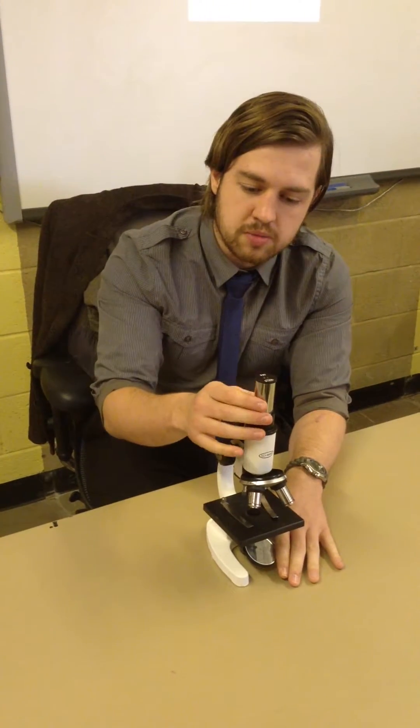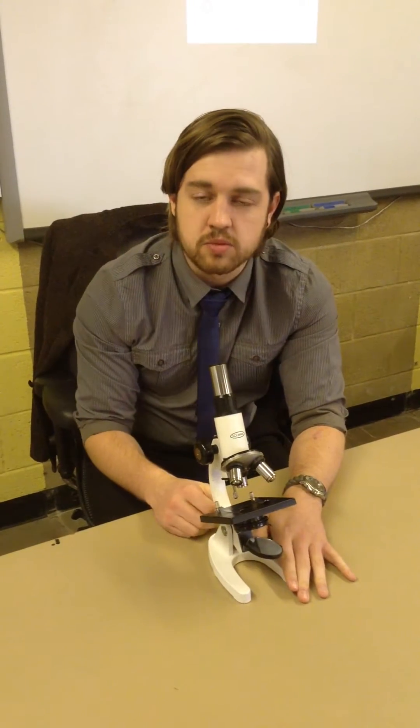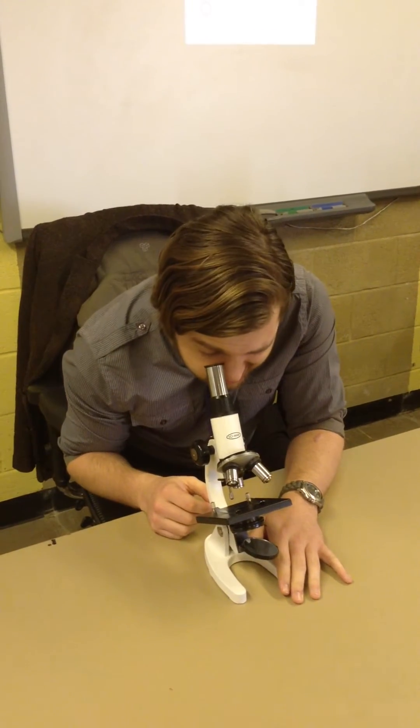And the last thing we have at the top here is the eyepiece lens. Now, the eyepiece lens is the part of the microscope that you look down. And that's it for the introduction to the microscope.